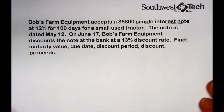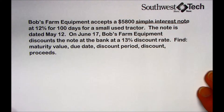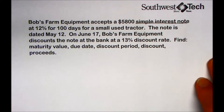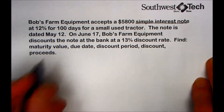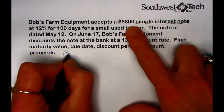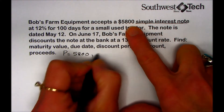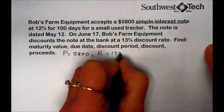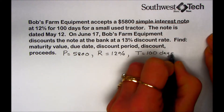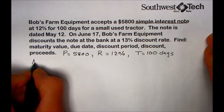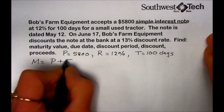The note is dated May 12th. On June 17th, Bob's Farm Equipment discounts the note at the bank at a 13% discount rate. We're asked to find the maturity value, the due date, discount period, and discount proceeds. Starting with the simple interest note: principal is $5,800, interest rate is 12%, and time is 100 days. To find the maturity value, we take the principal plus the interest.